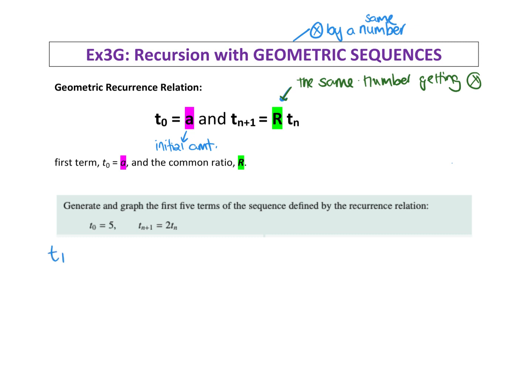To find T1, I do R times T0. In this case, R is 2, so it's 2 times 5, which is 10. Then T2 will be 2 times the one before, which is T1. So it's 2 times 10, which equals 20. T3 equals 2 times the one before, which is 2 times 20, which equals 40. T4 equals 2 times T3, which equals 80. And T5 equals 2 times T4, which is 2 times 80, which is 160.